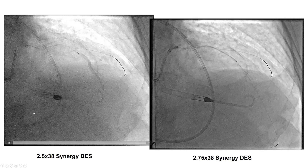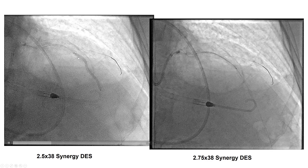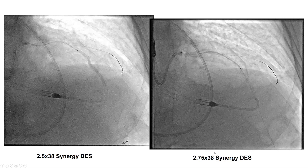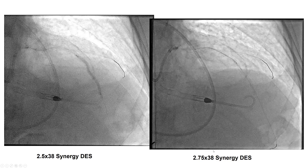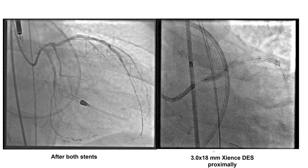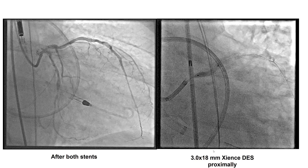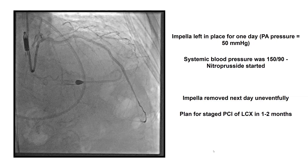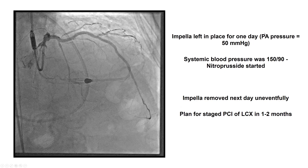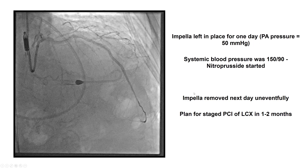Eventually, we were able to deliver a 2.5x38 mm Synergy drug-eluting stent — with the guide extension almost all the way to the mid-LAD — and then overlapped it more proximally with a 2.75x38 mm Synergy drug-eluting stent. After both stents were placed, we had a nice result. We placed an additional stent in the proximal LAD and got a nice final result. The patient did have elevated PA pressures, so we left the Impella in for another day, and it was removed the following day without any complications.